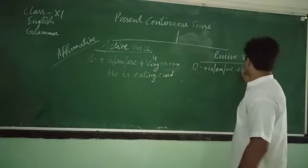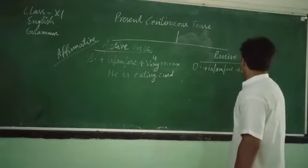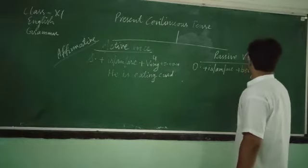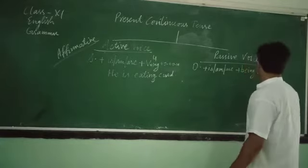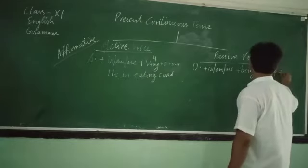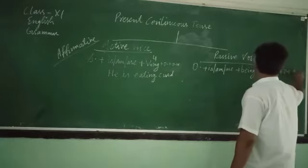What is the structure of passive? First of all, we write being. Then, we write V3. Then, we use preposition. Then, we write subject in object form. Then, other words.